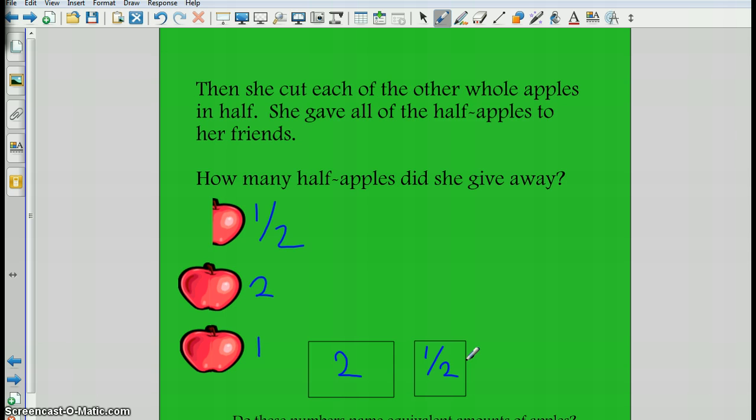As we work through the problems today, I want us to think about, we've been working with fractions and halves of pieces. Now we only have two halves that makes a whole, and this is where we talk about fractions that are greater than one. So we have one whole apple plus another one, which is two whole apples, and then we have one half left over.